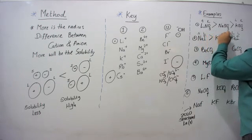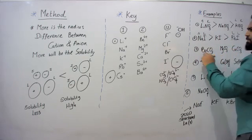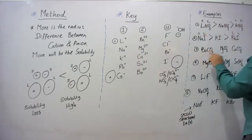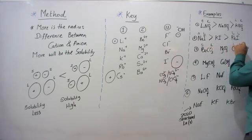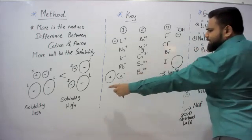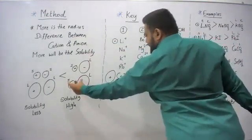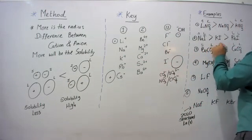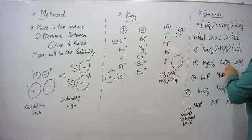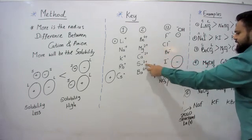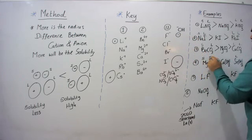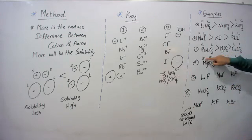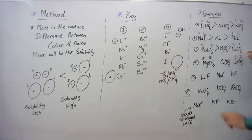For BeCO₃, MgCO₃, CaCO₃: beryllium is the smallest cation, calcium is the largest among these three. Carbonate is considered a large anion. So BeCO₃ is small/large — greater radius difference — meaning more soluble, while CaCO₃ is large/large and is the least soluble. For Mg(OH)₂, Ca(OH)₂, Sr(OH)₂: hydroxide is a small anion. Magnesium is the smallest — small/small — less soluble. Strontium is the largest — large/small — more soluble.